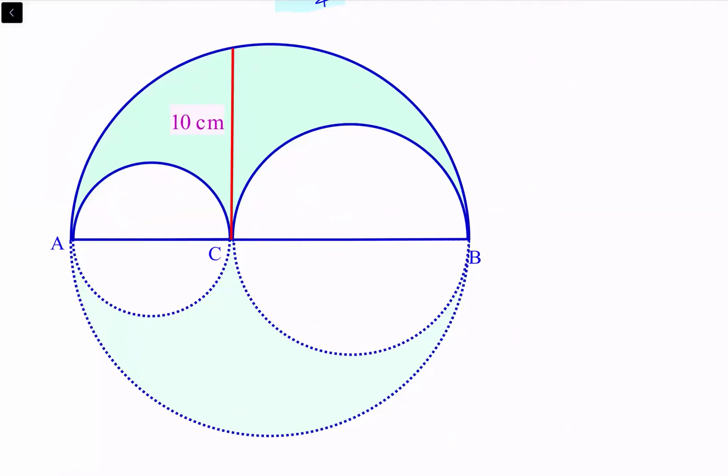We have extended the semicircles to complete them as circles. Here AC is A and BC is length B. By symmetry, if we extend this line, it will be like this. This is C, this is D, and this will also be 10 centimeters.